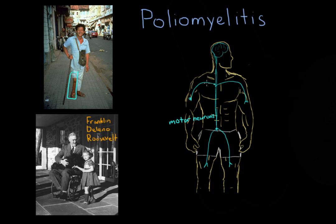One way to think of neurons is like electrical wires that provide electricity to your home. If you shut off these electrical wires, your home will no longer have any electricity. The motor neurons act in the same way — you can no longer power your muscles from these neurons after the poliovirus damages them.